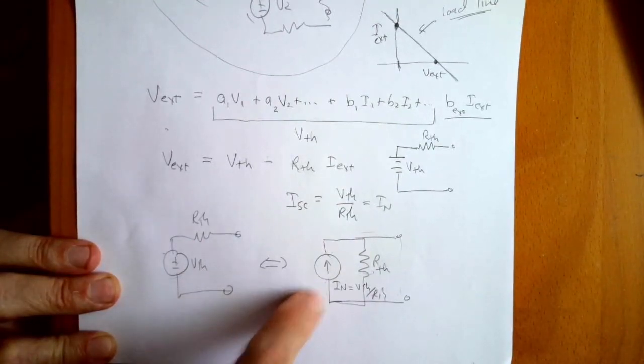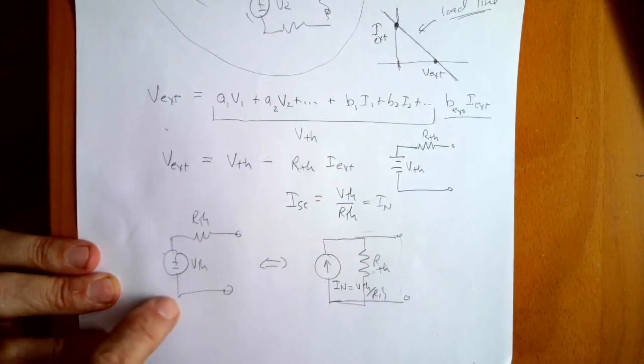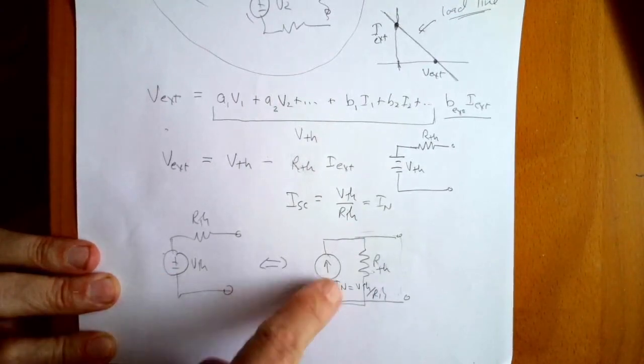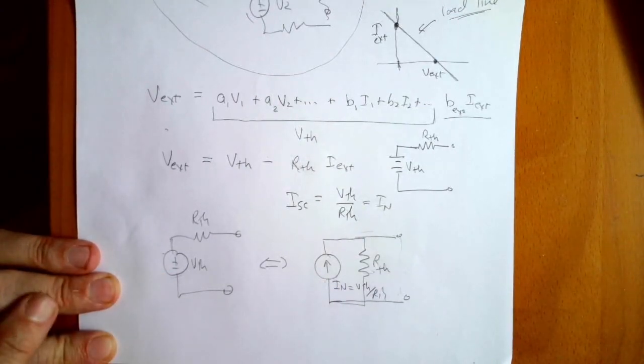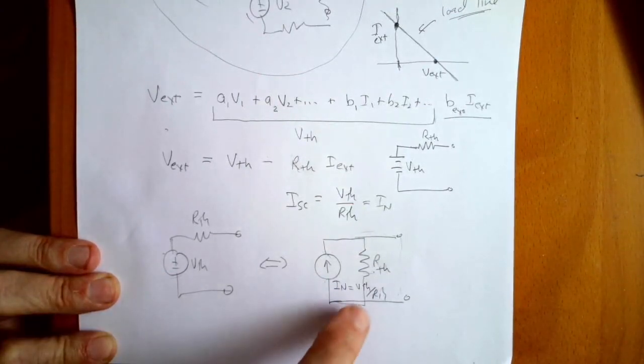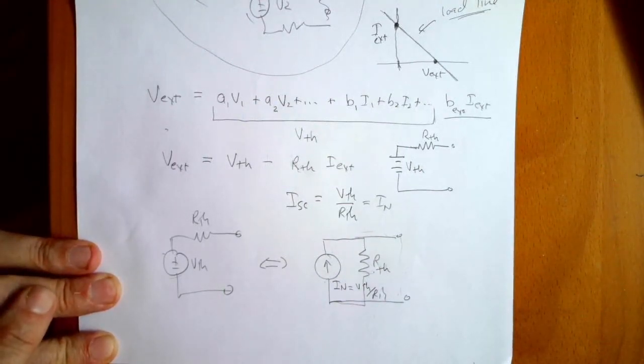I Norton is simply the short circuit current of the Thevenin circuit — it's just the short circuit current, which happens to be V Thevenin over R Thevenin. Alright, that's all I have for you on the theory.